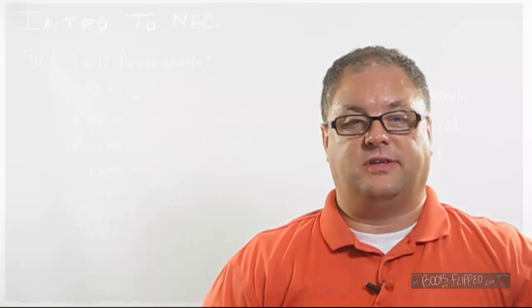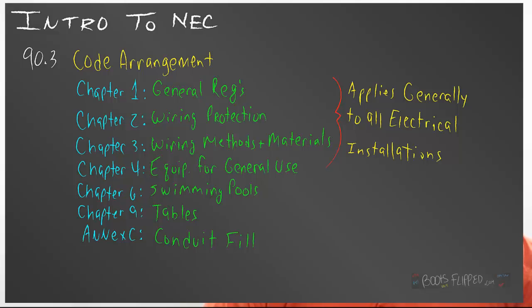If you want to figure out how to find things in the code, one of the best things you can do is understand how it's arranged. It's arranged in chapters. Chapter one tells you that you have some general requirements that you must follow — definitions, installation requirements, and general requirements. How about wiring protection? That's chapter two. We'll see that for grounding, for branch circuit conductors, and for services. We'll use that chapter constantly.